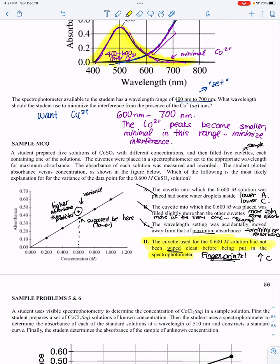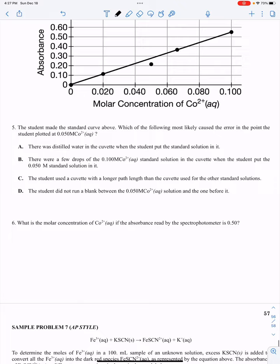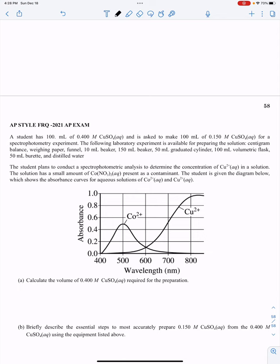This wraps up our last lecture in Unit 3, spectrophotometry and the Beer-Lambert Law. To check your understanding, try and complete sample problems 5 through 7 on your own. For help, you could try the AP style free response question from the 2021 exam last year. That is all. If you have any questions or need any help, please let me know.